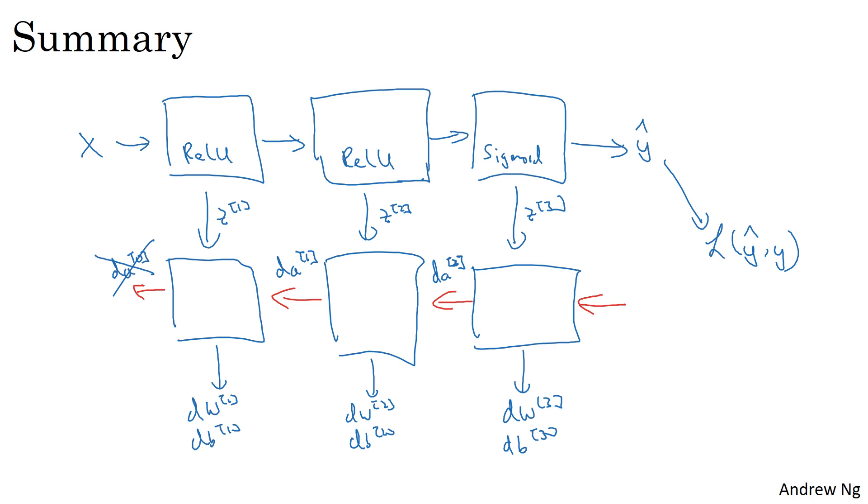There's just one last detail I didn't talk about. For the forward recursion, we initialize it with the input data x. How about the backward recursion? It turns out that dA^(L), when you're using logistic regression for binary classification, is equal to -y/a + (1-y)/(1-a). The derivative of the loss function with respect to the output, with respect to y-hat, can be shown to be equal to this.